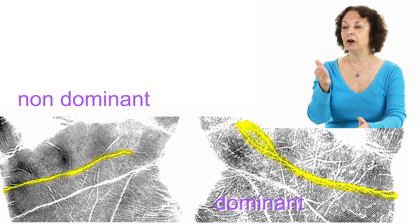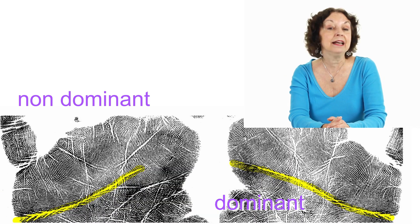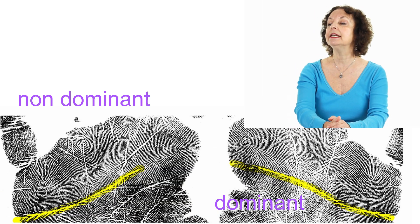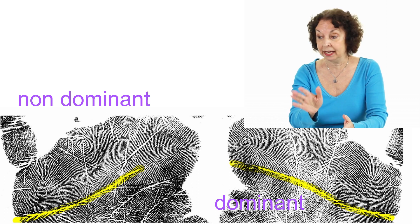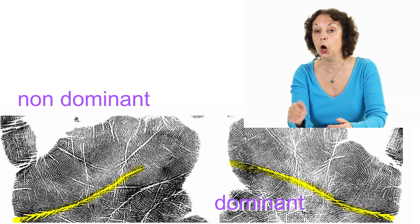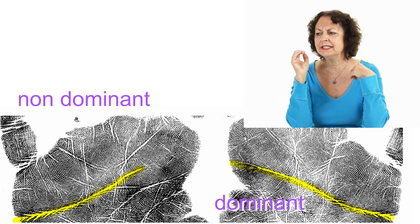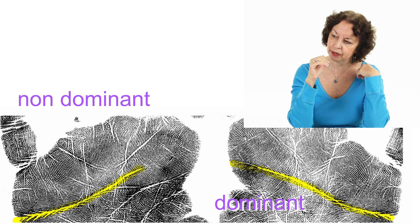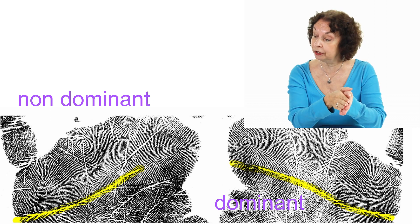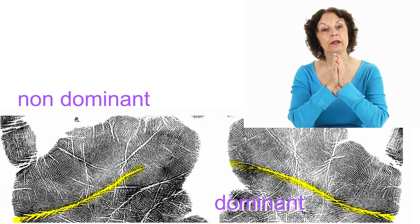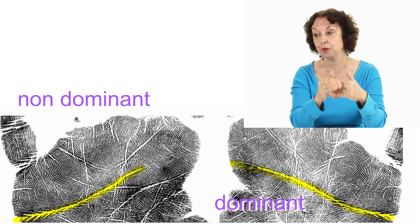And on our next and last case for today, you can see on the dominant hand, we have a very long and very straight line with a tendency to go down. As opposed to the non-dominant hand, where the line is short and straight.